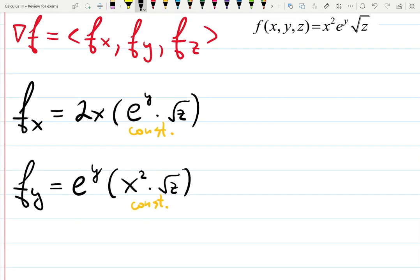The derivative with respect to z has the same idea. x squared and e to the y is a constant. Square root of z is a function.